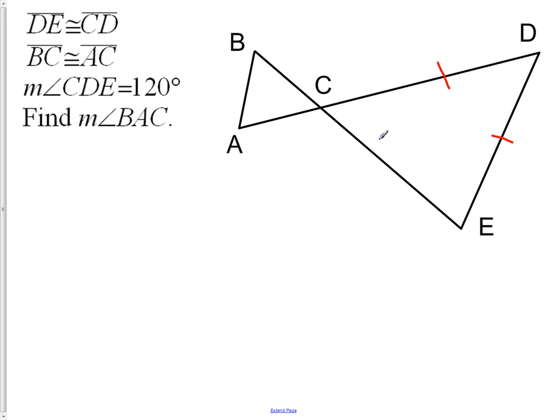Because of these two marks, I know that this angle right here and this angle right here must be congruent. They would be considered the base angles. If the two sides of this triangle are congruent, then the two base angles also must be congruent.